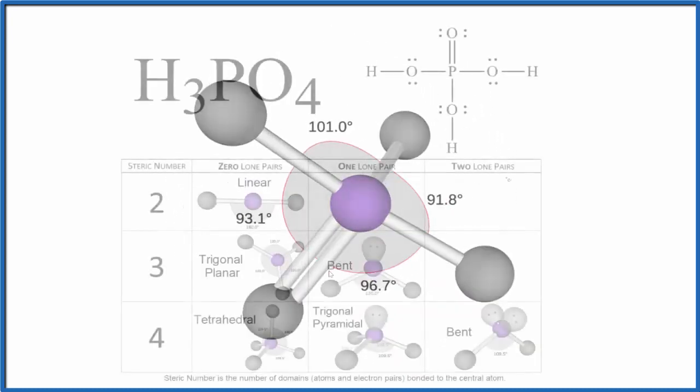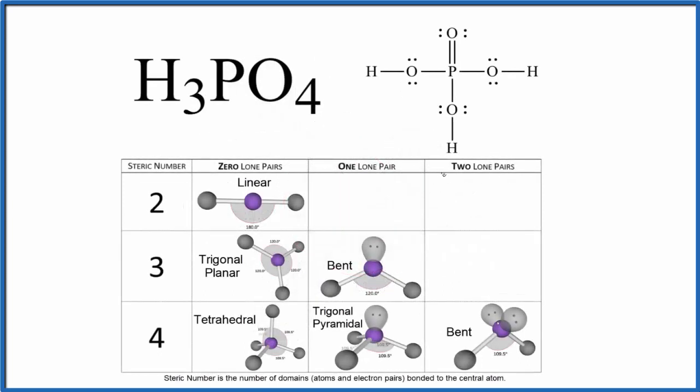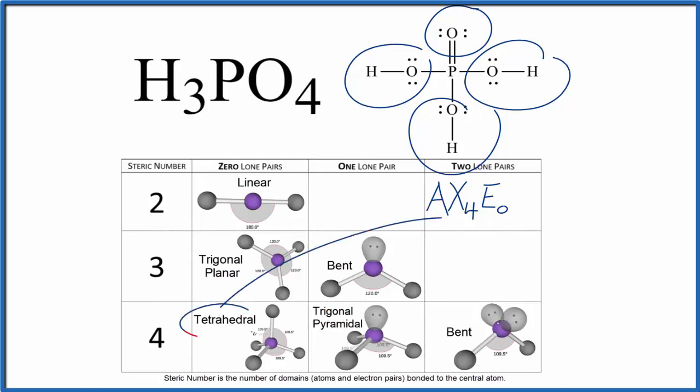Back to our Lewis structure, we could also use the AXE notation to figure out the molecular geometry here for H3PO4. A, that would be the central atom, our phosphorus here. X, that's the number of atoms bonded to it. We have one, two, three, four groups bonded here. And there are no lone pairs, so E would be zero. Often you just don't write the E. If we looked up AX4, we'd see that it is tetrahedral, just like we did with our tables.